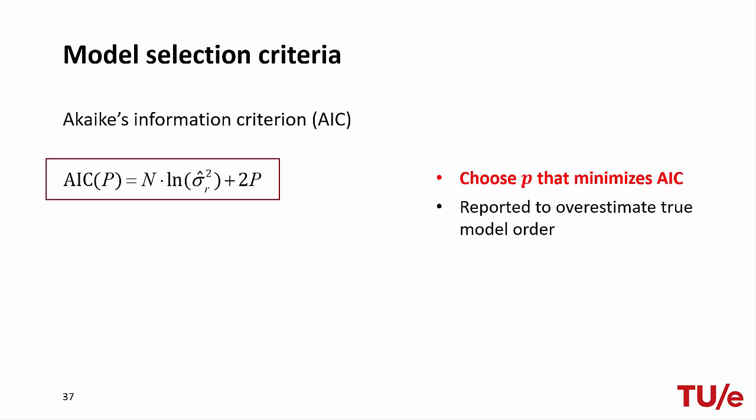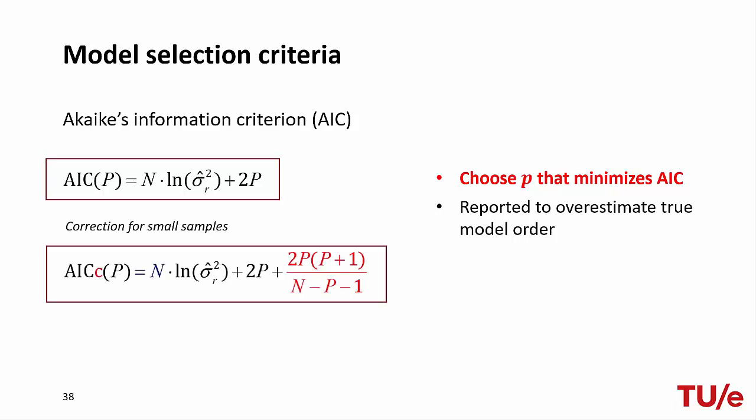Another commonly used metric is the AIC (Akaike Information Criterion), whose formula is given in the slide. Again, we see two contrasting terms: the first decreases with increasing P, while the second is a penalization term directly proportional to P. When dealing with small datasets, a corrected version — AICc — is typically used, which adds a term that further penalizes the AIC for large numbers of parameters and small N.